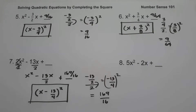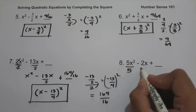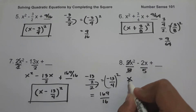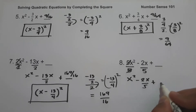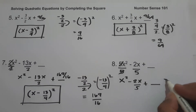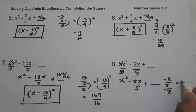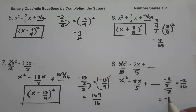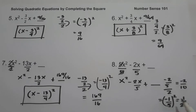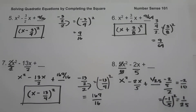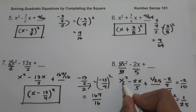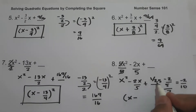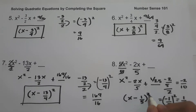On example number 8, we have 5x squared minus 2x plus blank. Just like in example 7, we make the value of a equal to 1 by dividing the whole equation by 5. So we have x squared minus 2x over 5 plus blank. We have negative 2 over 5 divided by 2, that is negative 2 over 10, or negative 1 over 5. Squaring: 1 squared is 1, 5 squared is 25. So we add 1 over 25. To factor: the square root of x squared is x, the sign is negative, the square root of 1 over 25 is 1 over 5, and then square. And this will be our answer.